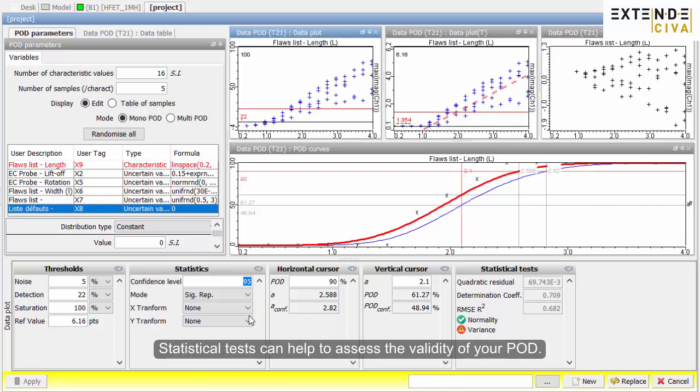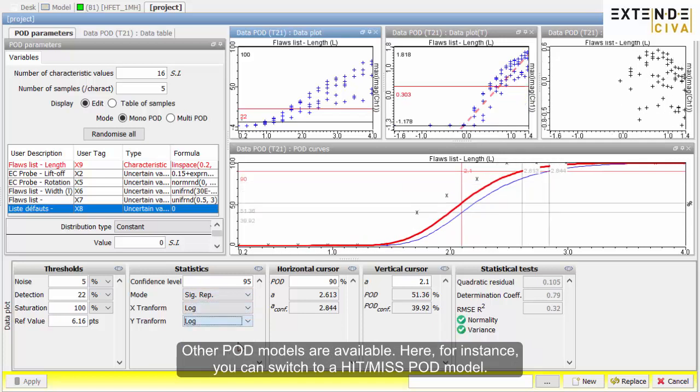Statistical tests can help to assess the validity of your POD. Other POD models are available. Here, for instance, you can switch to a hit-miss POD model.